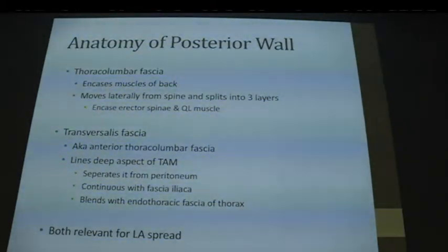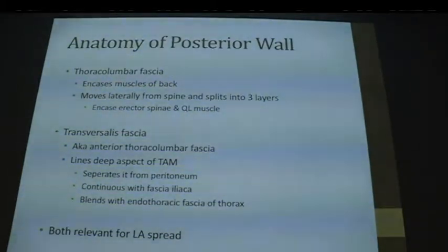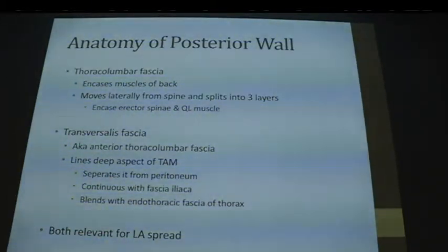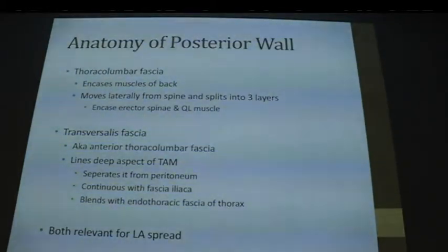Thinking about the posterior abdominal wall, there are a couple of important fascias. There's the thoracolumbar fascia, which encases some of the muscles of the back including the erector spinae — actually three separate muscles — and also the quadratus lumborum, which has become quite trendy more recently. Then you've got transversalis fascia, which is one of the layers of the thoracolumbar fascia, lining the deep aspect of the transverse abdominis muscle and important for spread of local anaesthetic. Interestingly, this fascia is continuous caudally with the fascia iliaca and blends with the endothoracic fascia of the thorax, which is the structure in the paravertebral space.